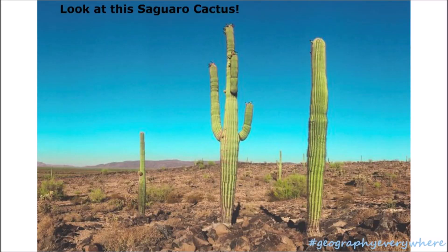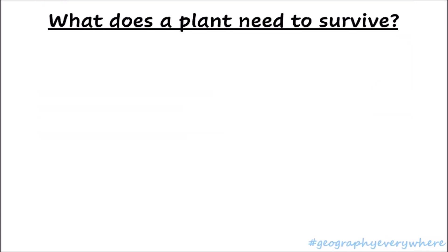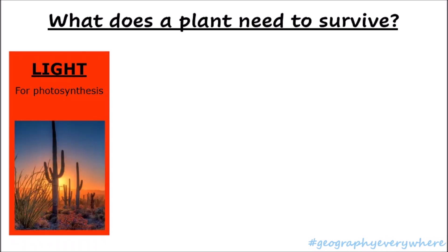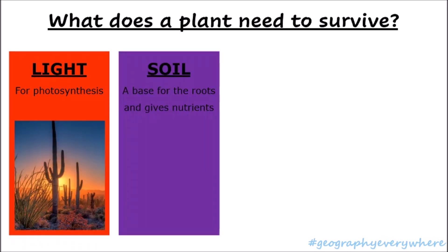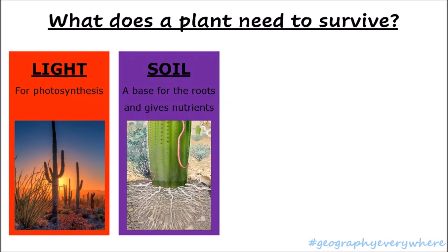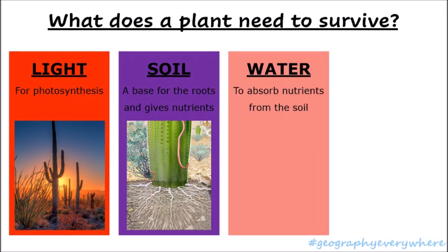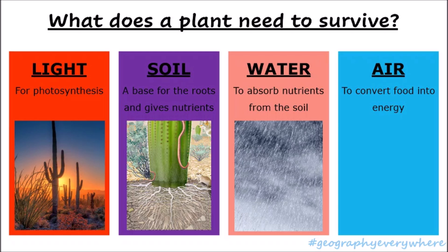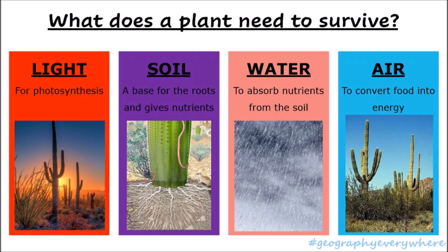Let's think about a plant now. Look at this saguaro cactus. What does it need to survive, and can it survive anywhere else? A plant also needs four things, but they're a little different from an animal. A plant needs light to carry out photosynthesis, soil as a base for the roots which also gives nutrients to help it grow, water to absorb those nutrients from the soil, and air to help convert food into energy.